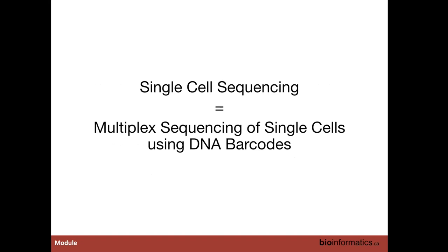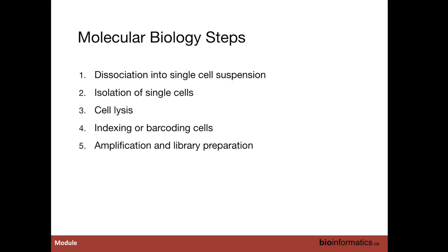Single cell sequencing is in effect multiplex sequencing of single cells using DNA barcodes. The basic steps on the molecular biology side are: dissociation into single cell suspensions, isolation of single cells, cell lysis and removing bound proteins from the DNA, indexing or barcoding the cells so they can be identified in downstream analyses, and then amplification and library preparation. Most protocols involve some variation on these steps.